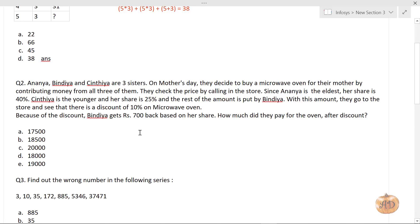The values here are: A, Ananya, is contributing 40%. B, Bindya, is contributing currently value X. And C, Cynthia, is contributing 25%. When you do 100 minus 25 minus 40 equals 35, so share of B is 35%.